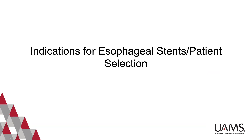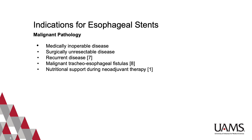We'll start by reviewing the indications for stent placement and criteria for patient selection. Esophageal stents are first-line therapy for palliation of dysphagia in patients who are not candidates for other therapy modalities, whether that be due to their medical comorbidities or due to tumor characteristics that classify the lesion as unresectable.